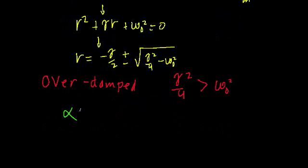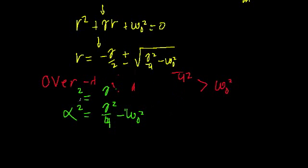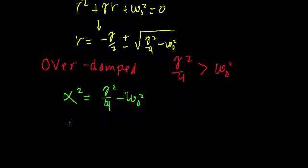We can say that alpha squared is equal to gamma squared over four minus omega naught squared. And if we plug that in here, we get that our two roots, r, are equal to negative gamma over two plus or minus alpha.